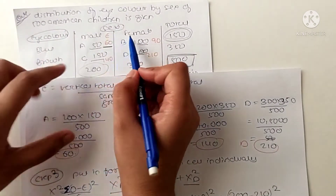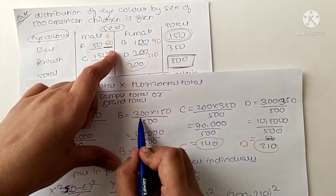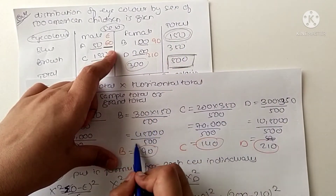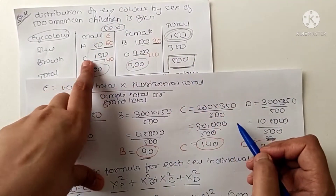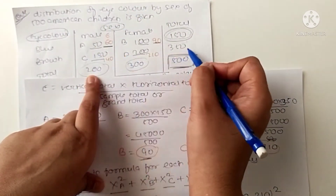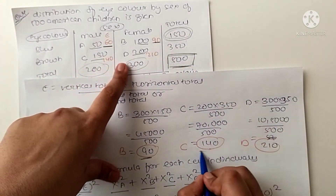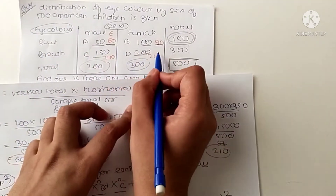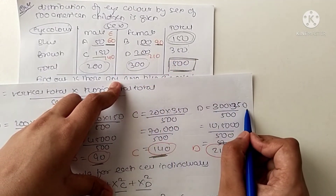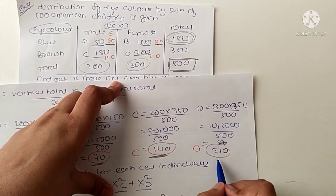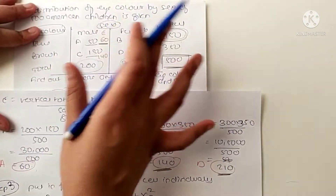For cell B: vertical total 300 multiplied by horizontal total 150 divided by grand total 500 gives 90. For cell C: 200 into 350 divided by 500 gives 140. For cell D: 300 into 350 divided by 500 gives 210. This is how we calculate the expected values from the observed data.